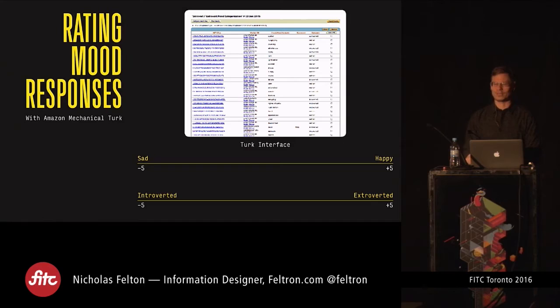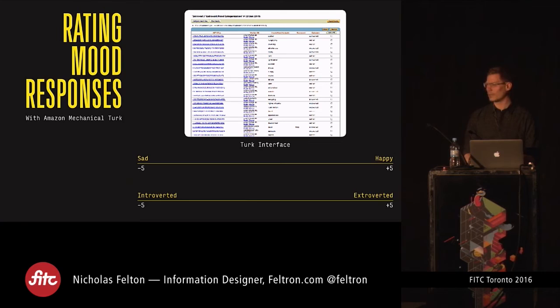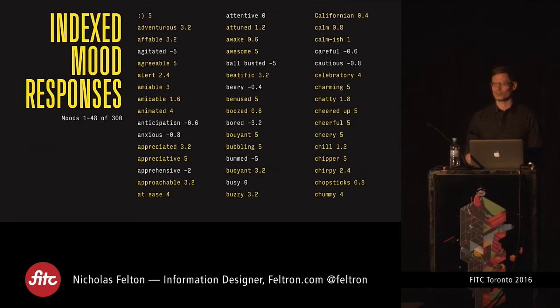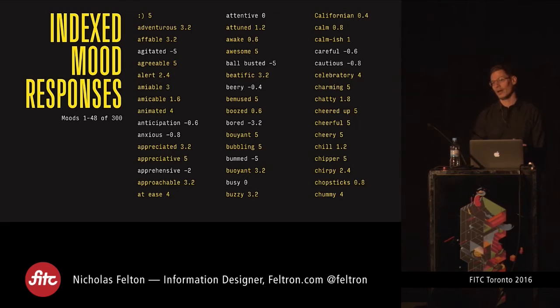Going back to the moods I collected, I was really transfixed by this data set but scared that I'd reintroduce my own feelings into it if I started categorizing them myself. I wanted to know if they were happy or sad, introverted or extroverted. So I used Amazon's Mechanical Turk — a system where you can send random people small tasks — asking about five people per word what they thought it expressed. That allowed me to index all the responses with a confidence level. Some interesting things came out of it: 'beery' as in you've consumed a lot of beer is slightly negative, while 'boozed' is positive.